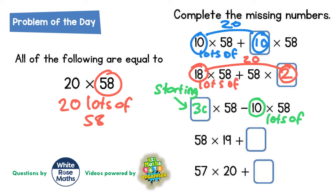Well, 30 is the number that you subtract 10 from to end up with 20. So think of it like this: 30 lots of 58 subtract 10 lots of 58 would leave you with 20 lots of 58, which is what we're asking for.